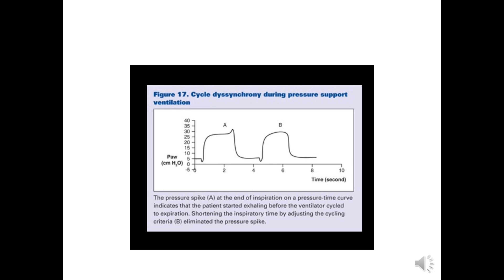These are the basic ventilator waveforms, ventilator loops, and some of the troubleshooters that we can detect from the ventilator graphs. It is a very vast topic with many different waveforms, but we have discussed almost all the basic waveforms and ventilator graphics that help in monitoring patients on a ventilator and detecting main troubleshooters. Thank you.